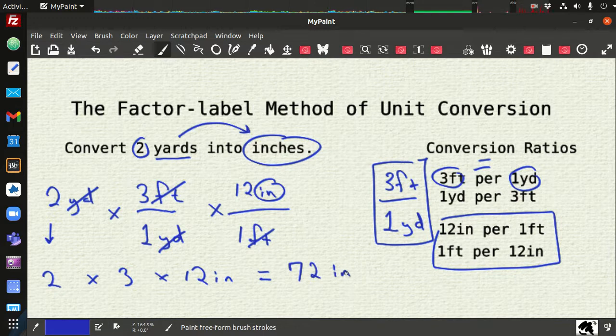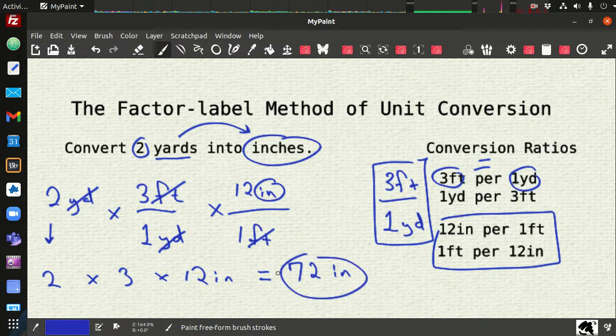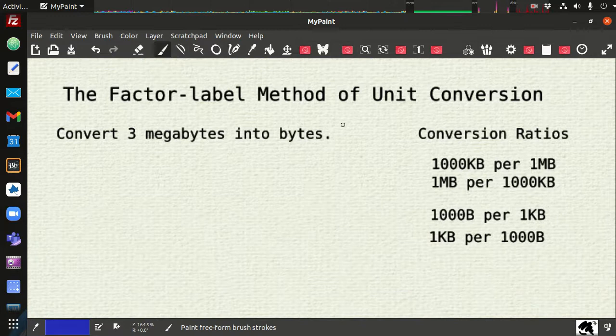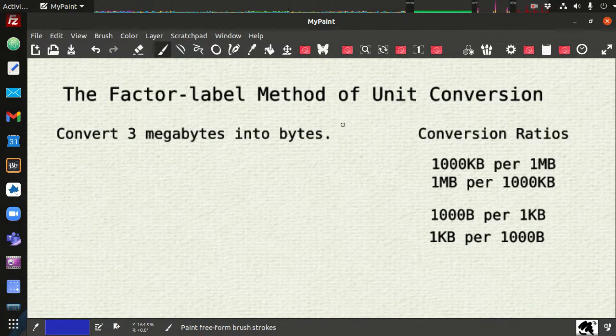And that makes sense. Because we know 2 yards, a yard is 3 feet. So 2 yards is 6 feet. And 6 feet is 72 inches. So just based on fairly common knowledge, we know that this answer is correct. But we see that this factor label method does indeed work. So let's try another problem as it relates to computer science. So these types of unit conversions will happen all the time.